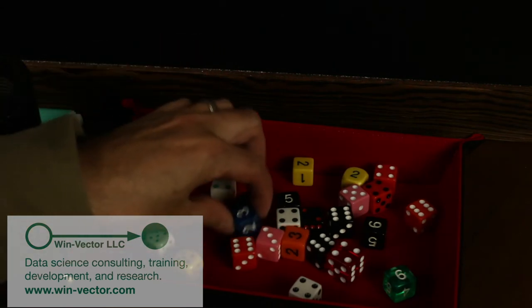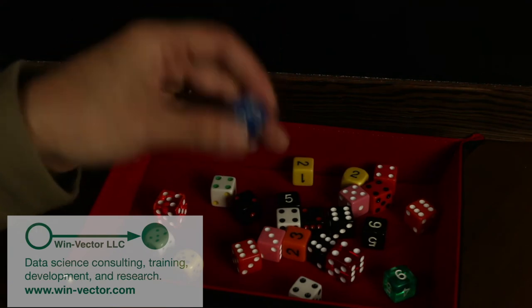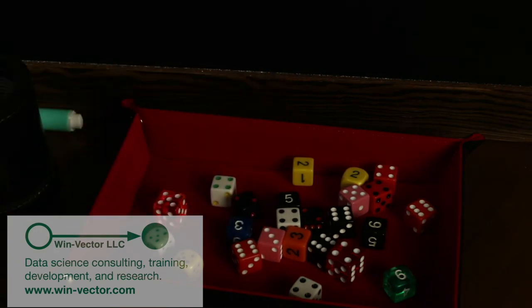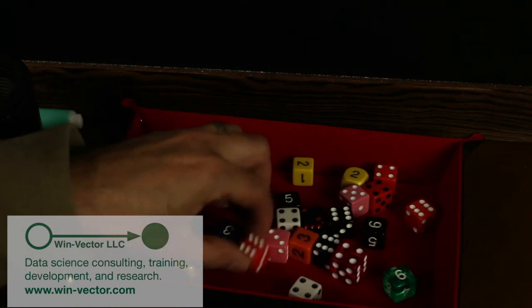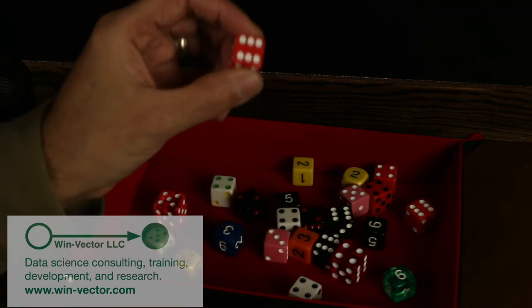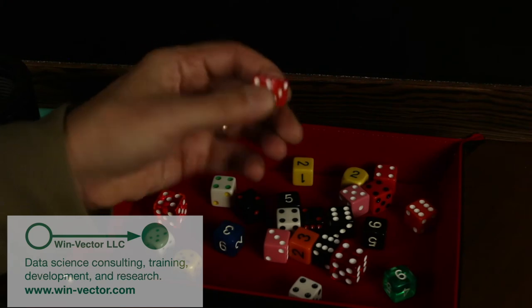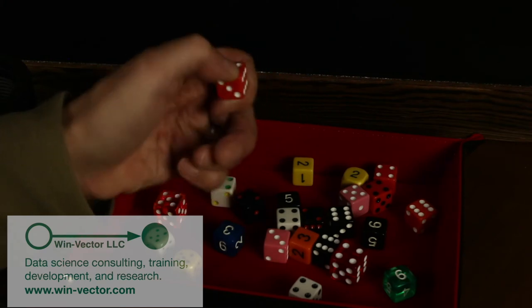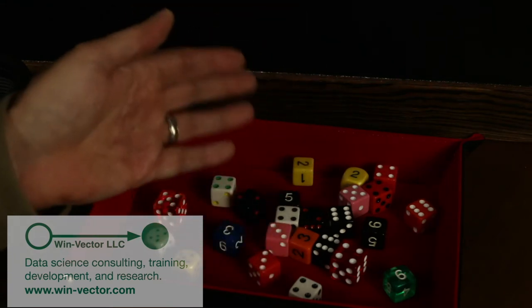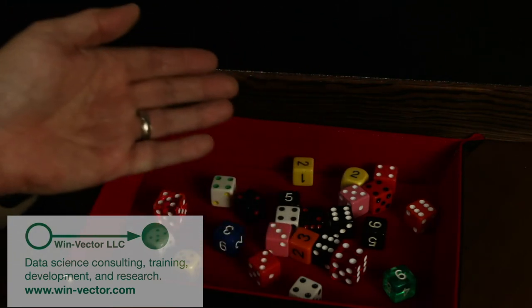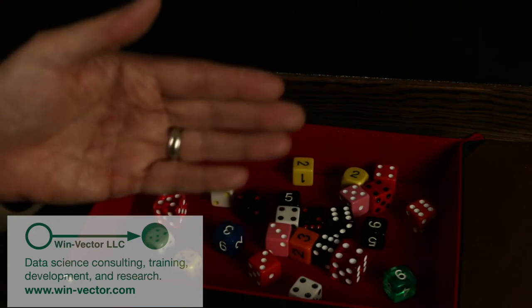So the expected value of these unfair dice is five, higher than the 3.5 expected value of these fair dice. Now, pretend that each and every one of these dice, the value returned when rolled, is the value of this deal. So this might be worth six, this might be worth three, and this might be worth one. This is our gross revenue on the deal.